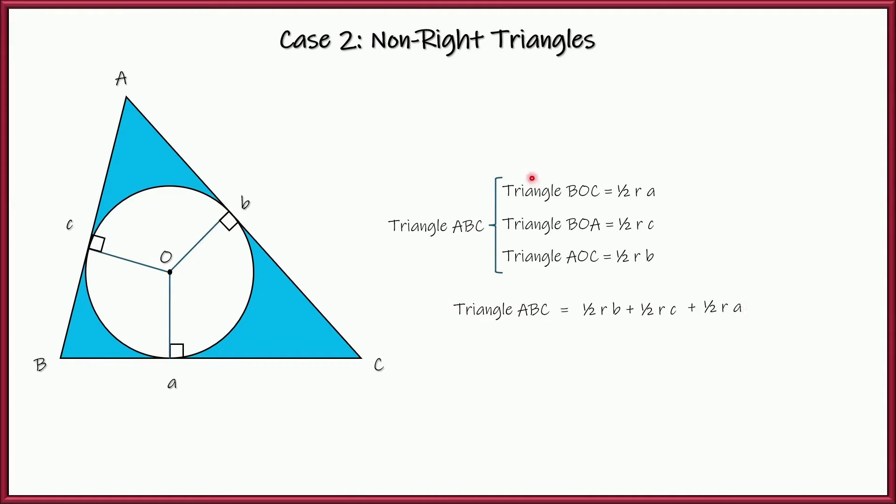So let's go ahead and write our equation. The area of triangle ABC, the big triangle, is equal to the three smaller triangles, right? So that'd be one-half RB plus one-half RC plus one-half RA. We can simplify that. We can factor out a one-half R. I'm going to put the R first times A plus B plus C.